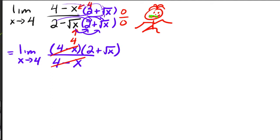So then what you can do is you can plug in your value four, and you would get two plus the square root of four, which is just equal to four. And that's it.